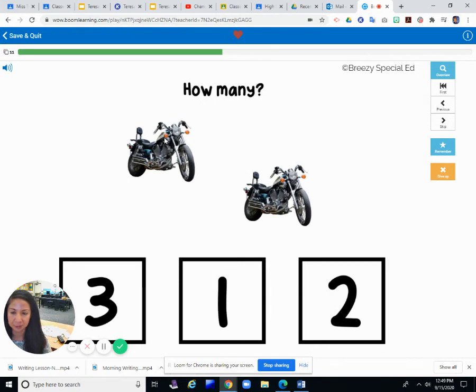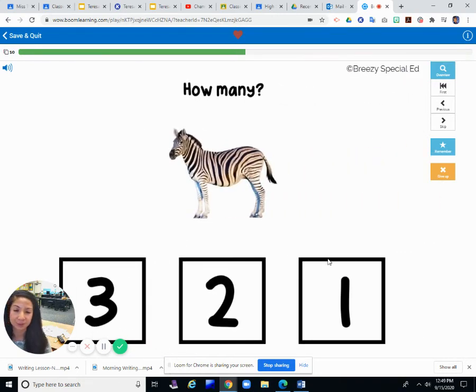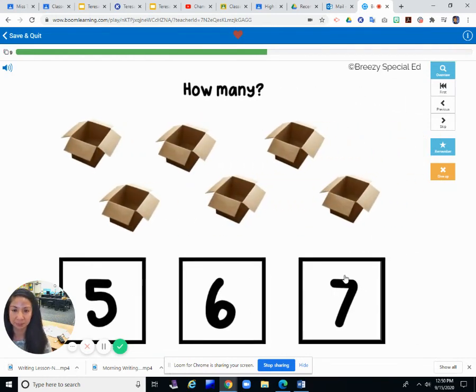How many motorcycles? One, two. Is it three? Is it one? Is it two? Okay. We'll do this last one because this one is easy, I think. How many zebras? One. Three, two, or one? One.